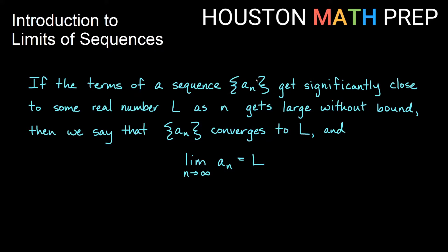If we have some sequence a sub n and the terms of that sequence get significantly close to some real number — by significantly close we mean as close as you can imagine and stay right there around that number, call that number L — as your terms get bigger and bigger, after some point we're really close to some real number L, then we say that the sequence itself converges to that L, and we call that L the limit of the sequence.